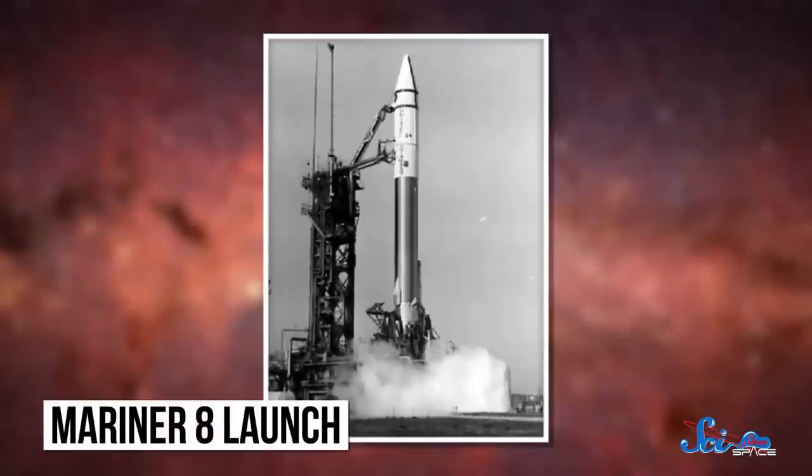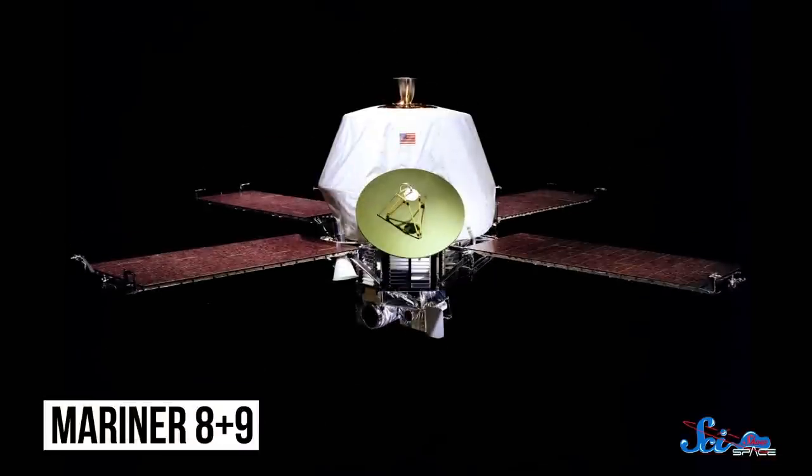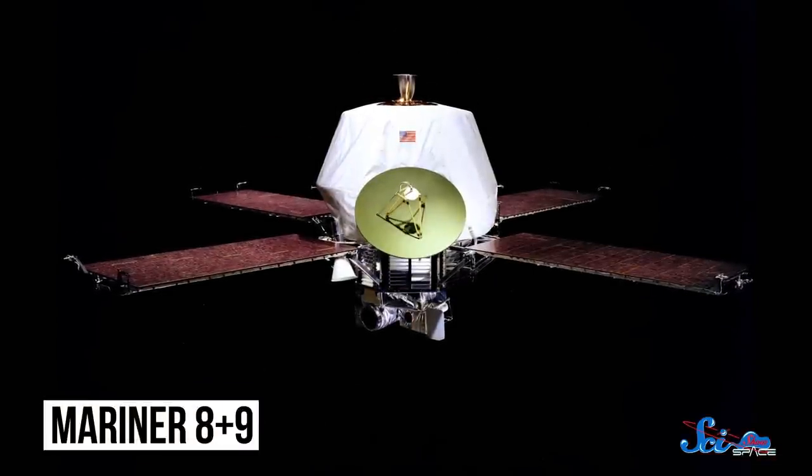Clearly, just flying by wasn't good enough, so Mariner 8 and 9 aimed to fix that. 8 was destroyed in a launch malfunction, which is a nice way of saying that, after liftoff, it came right back down and landed in the Atlantic Ocean. But in 1971, Mariner 9 became the first spacecraft to orbit another planet.